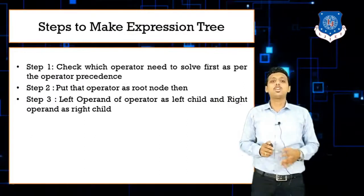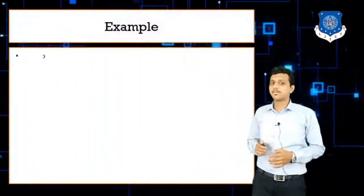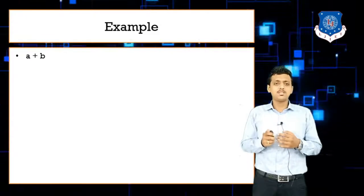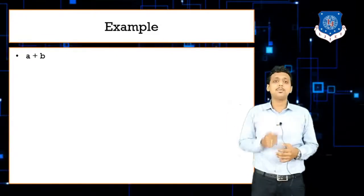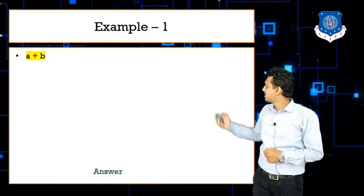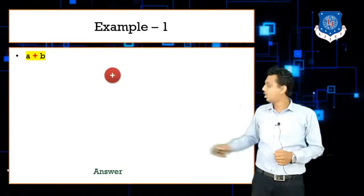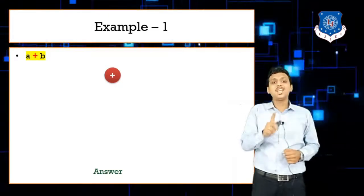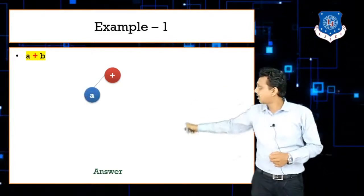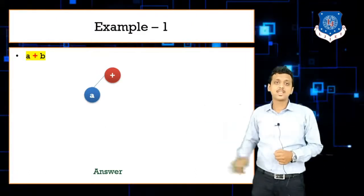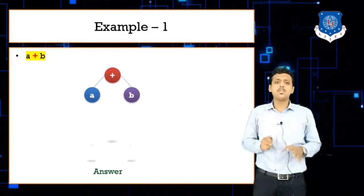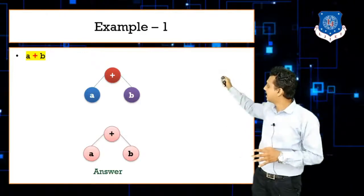Let's begin with the first example: a + b. The operator is plus, so plus becomes the root node. A is on the left side of plus, so a becomes the left child. B is on the right side, so b becomes the right child.